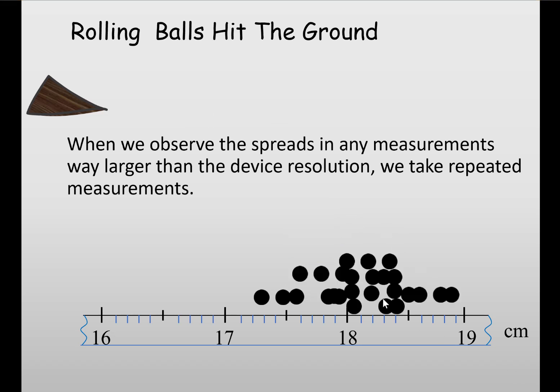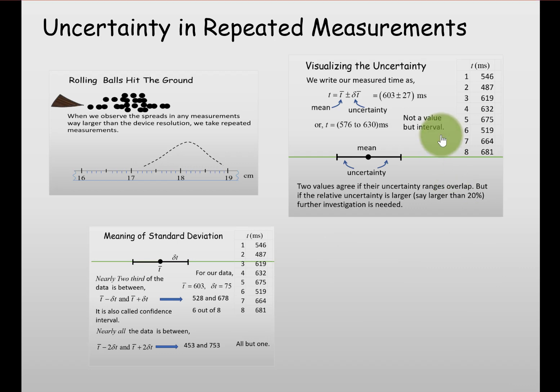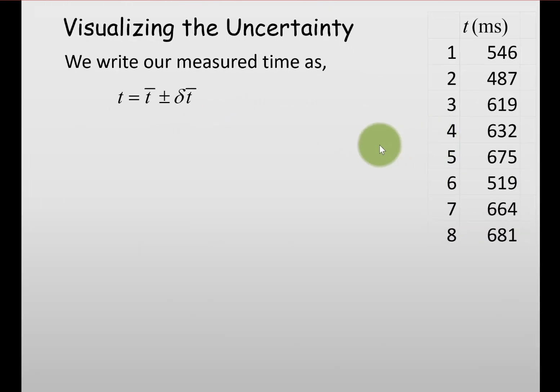Until we get a random distribution of data that looks like a bell curve. In this table you see repeated measurements of the time, so there are eight data points.